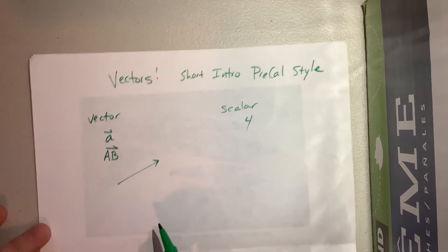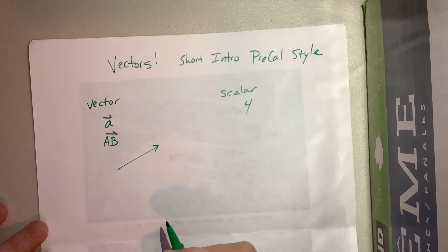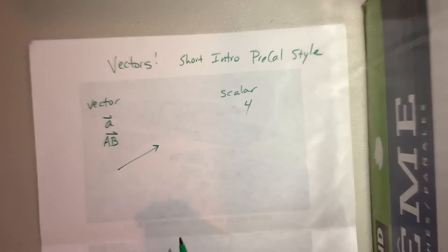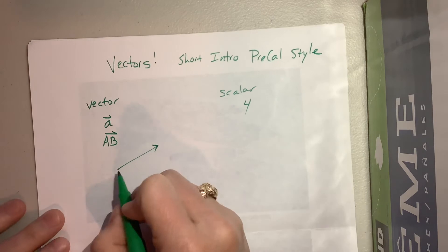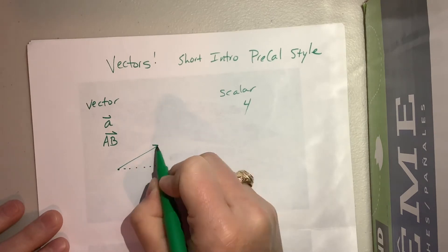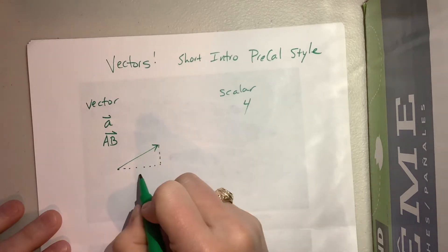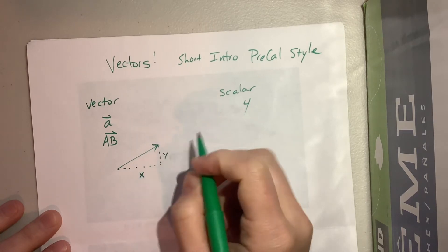Now what we might say is we can name that vector either in telling us its direction and its magnitude or we can label that vector in its components. Okay, and both end up being helpful.